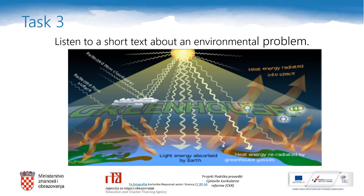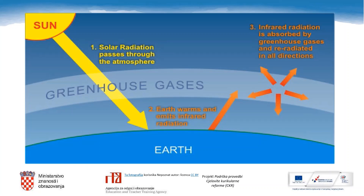The greenhouse effect is the warming of the Earth's surface and the air above. It is caused by gases in the air that trap energy from the sun. These gases are called greenhouse gases. The greenhouse effect is extremely important for life on Earth as it gives us the heat we need. Without it, the temperature on Earth would be so low that people could not survive.